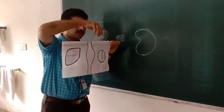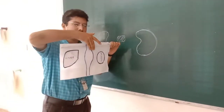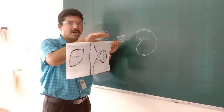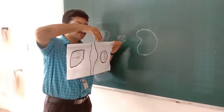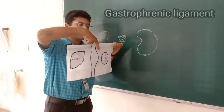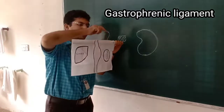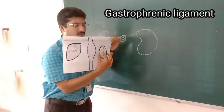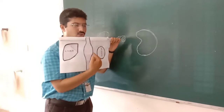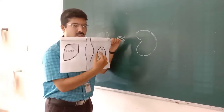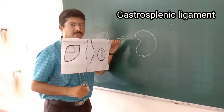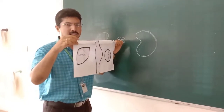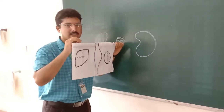The area of the dorsal mesogastrium extending between the stomach and the diaphragm — which is developing in the upper part — is the gastrophrenic ligament. The area of the dorsal mesogastrium extending between the stomach and the spleen is the gastrosplenic ligament. Further development of the ligaments will be seen in the next section.